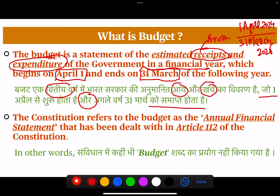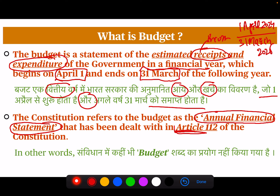The Constitution of India refers to the budget as the Annual Financial Statement. So in the Constitution, the budget term is referred to as the Annual Financial Statement, which has been dealt with under Article 112. So in Article 112, we have the Annual Financial Statement, also abbreviated as AFS.